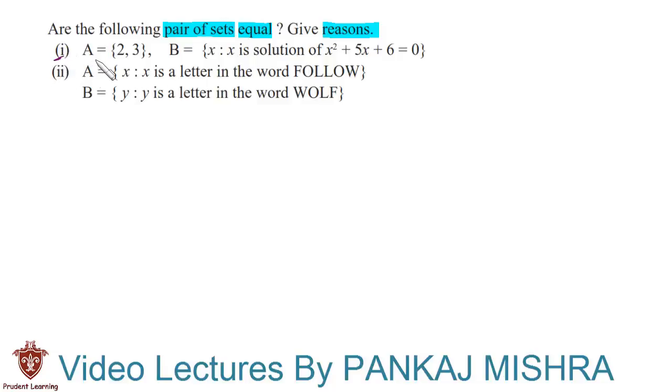In the first section, set A contains the elements 2 and 3, whereas set B is given to us in set builder form where x is such that x is a solution of the equation x² + 5x + 6 = 0.